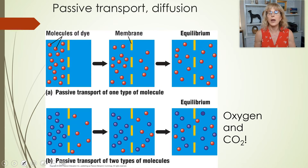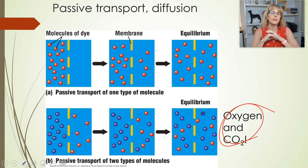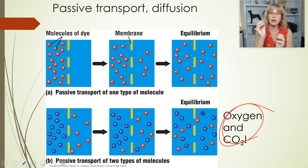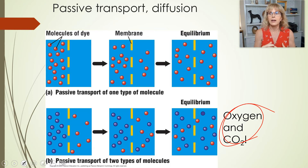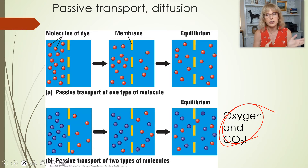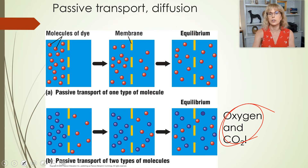Oxygen and carbon dioxide move by passive transport this way all the time. The reason oxygen goes into your blood is because there's more oxygen in the air sacs of your lungs than in the blood returning from your body, so oxygen moves into the blood by diffusion. Then when the blood reaches your muscle cells, the level of oxygen in the blood is higher than inside the muscle cells, so oxygen moves out of the blood into the muscles, just by diffusion.